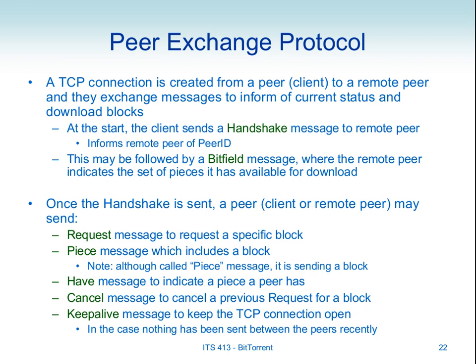The peer exchange protocol has different types of messages. The first thing peers do is perform a handshake—there's a handshake message. Focusing on peer C1, it creates a TCP connection to peer C2. It gets C2's IP address from the tracker, creates the connection, and then starts exchanging BitTorrent messages, the first of which is the handshake message. We send a handshake identifying ourselves; it gives some identity of our peer—it has an ID.